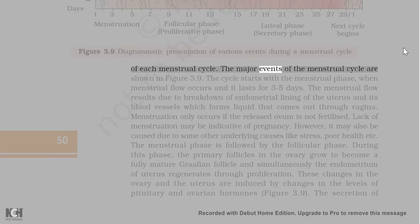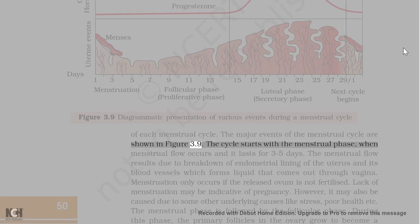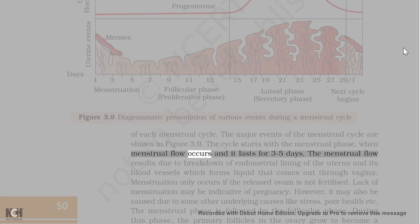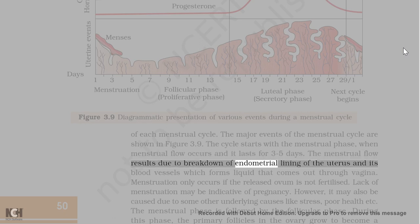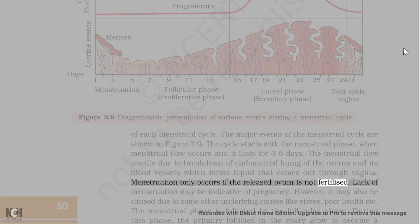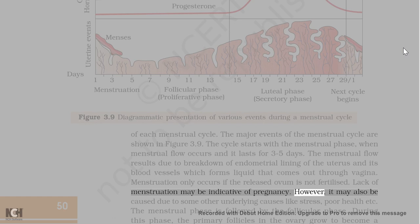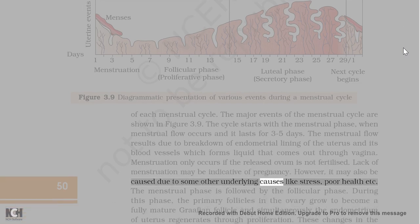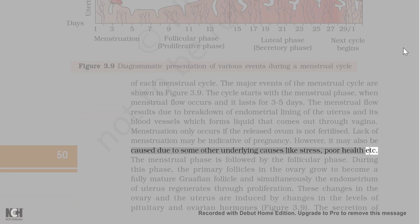The major events of the menstrual cycle are shown in Figure 3.9. The cycle starts with the menstrual phase, when menstrual flow occurs and it lasts for 3-5 days. The menstrual flow results due to breakdown of the endometrial lining of the uterus and its blood vessels, which forms liquid that comes out through the vagina. Menstruation only occurs if the released ovum is not fertilized. Lack of menstruation may be indicative of pregnancy; however, it may also be caused due to other underlying causes like stress, poor health, etc.